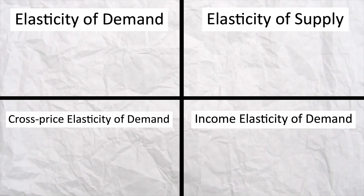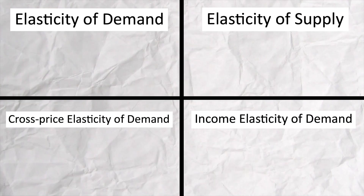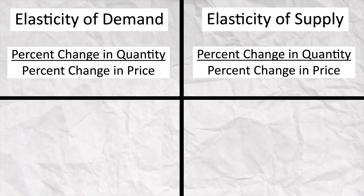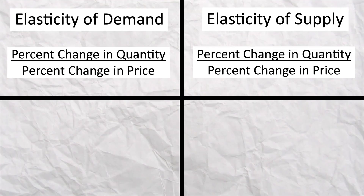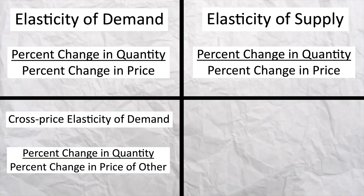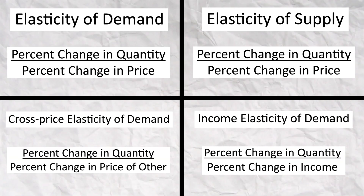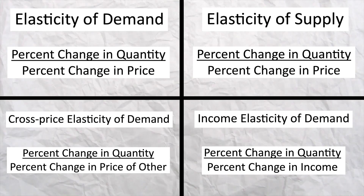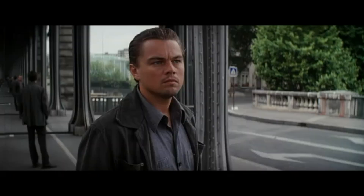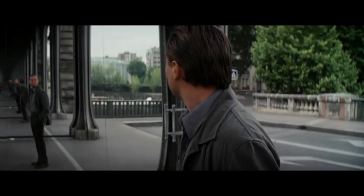Another example of mirrored equations are the four different types of elasticity: elasticity of demand, supply, cross price, and income. They're all basically the same equation — the percent change in quantity divided by the percent change in price. For demand and supply, that percent change in price is the product you're actually looking at. For cross price, it's the price of a different product. And for income, it's not price — it's a change in income. The point is, once you really understand one, it makes it a lot easier to understand the others.